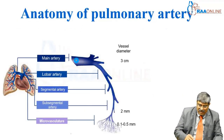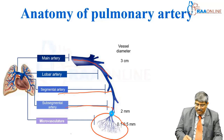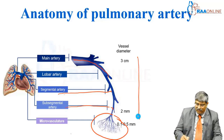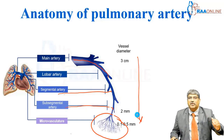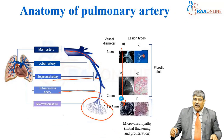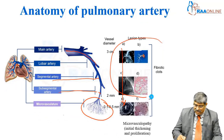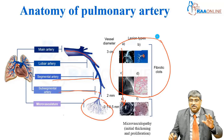You can see the main pulmonary artery, then the lobar artery, segmental artery, subsegmental artery, and the microvasculature. From a size of 30 millimeters, it comes down to 0.5 millimeters in the microcirculation. From the main pulmonary artery up to the subsegmental artery, you will have fibrous clot. You can see the clot goes up to the level of the subsegmental artery.